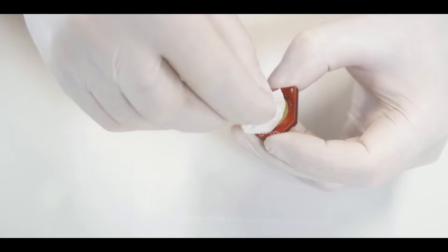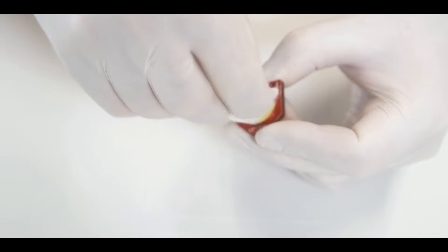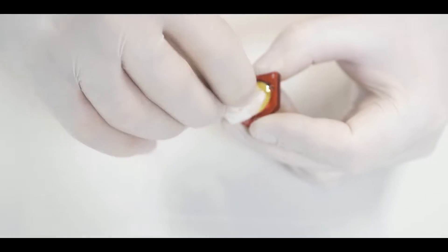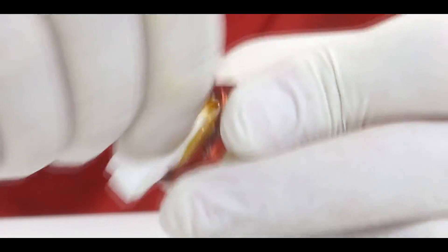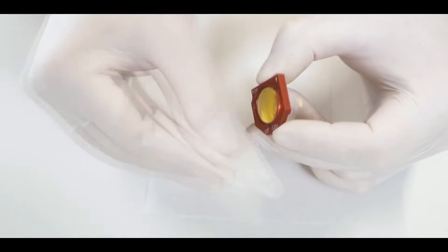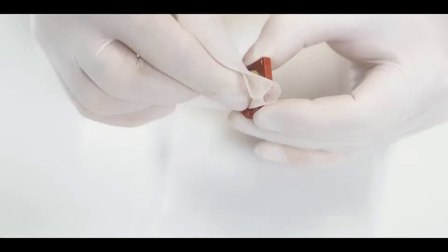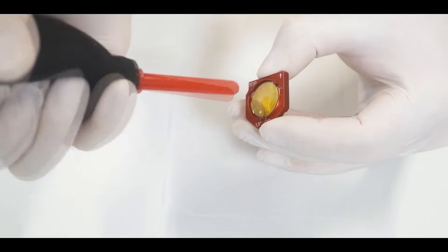Use the folded tissue to gently clean the optic in a circular motion. Make sure you do not apply any pressure on the lens. Then take a new lens tissue and wipe off any remaining fluid. Use the air blower to get rid of any remaining dust.